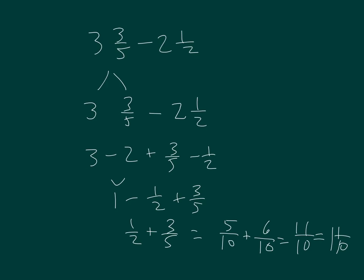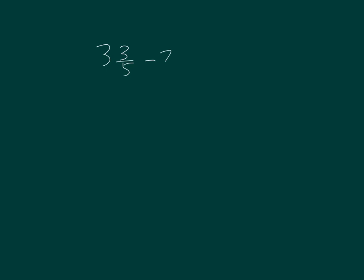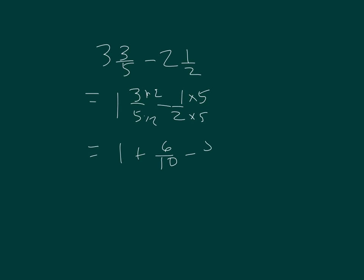Do we have other ways? Probably. Let's try another way. Three minus two is one, so we have one and three-fifths minus a half. Name them all as tenths — times five, times five, times two, times two — equals one plus six-tenths minus five-tenths. Six-tenths minus five-tenths is one-tenth, so that's one and one-tenth. So there's more than one way to solve a problem. One of the keys, though, is to get like units.